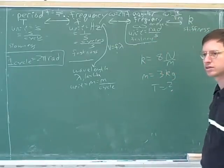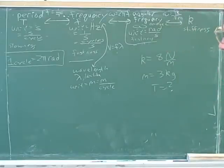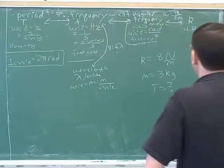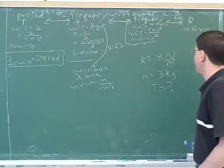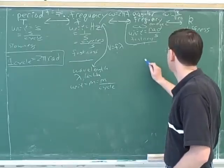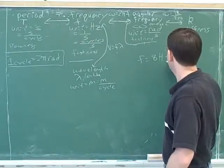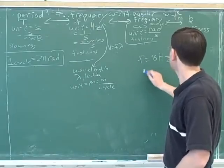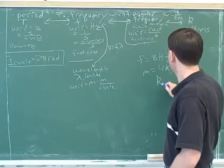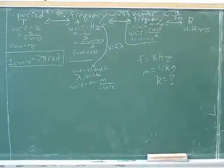If we're dealing with springs, the k should always be provided, right? Well, they don't have to provide the k. For example, you could have a problem where they tell you that the frequency is 8 hertz and the mass is 4 kilograms, and they could ask you for the k. How would you do that?